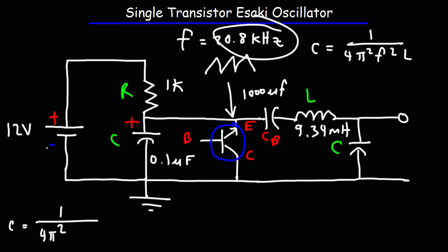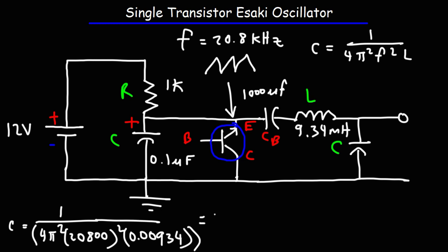So the frequency is 20.8 kilohertz. So that's 20,800 hertz. And don't forget to square it. And the inductance is 9.34 millihenrys. That's 9.34 times 10 to the minus 3, or 0.00934 henrys. And you could put this whole thing in one single set of parentheses. So you should get 6.3 times 10 to the negative 9 farads. 10 to the minus 9 is equivalent to nano. So what we need to use is a 6.3 nanofarad capacitor.